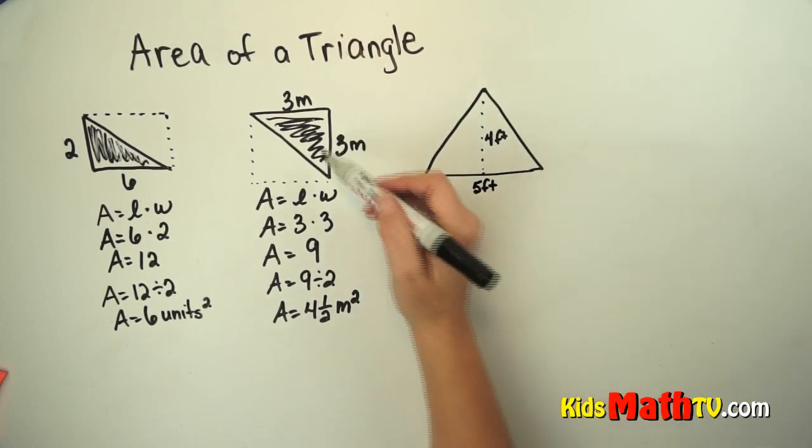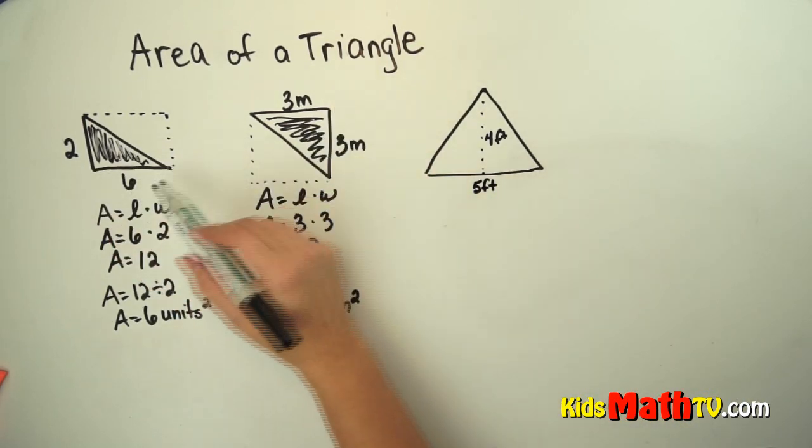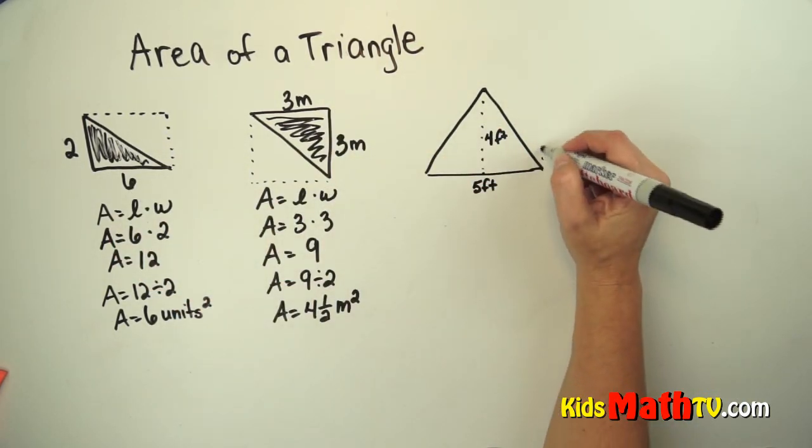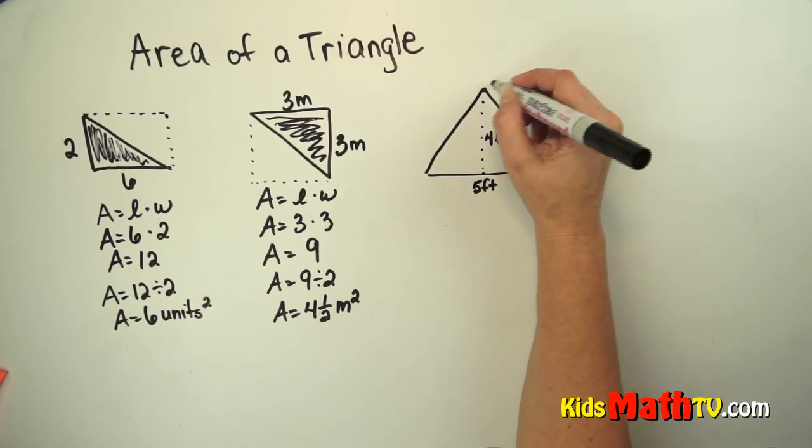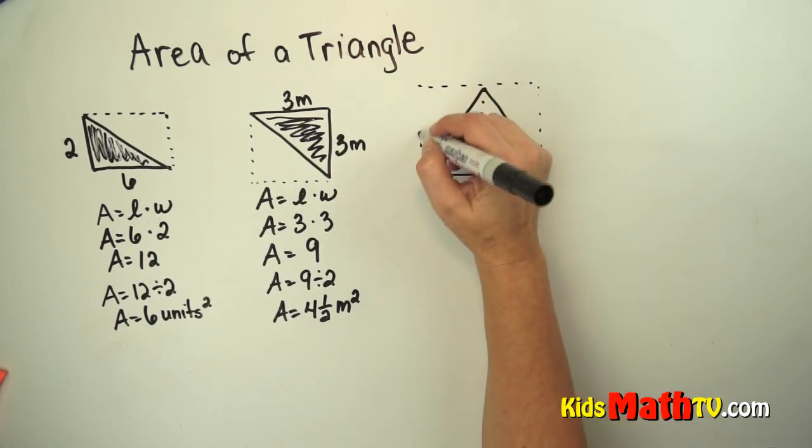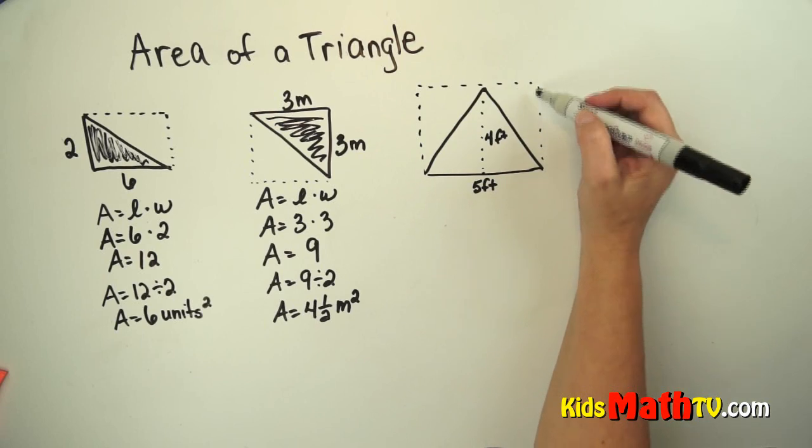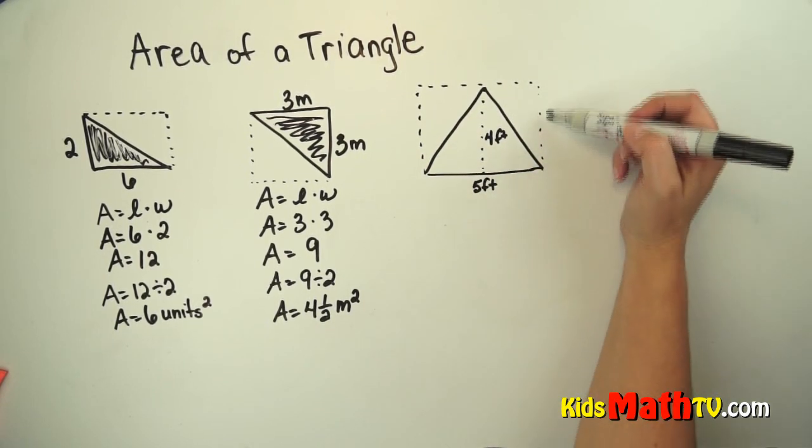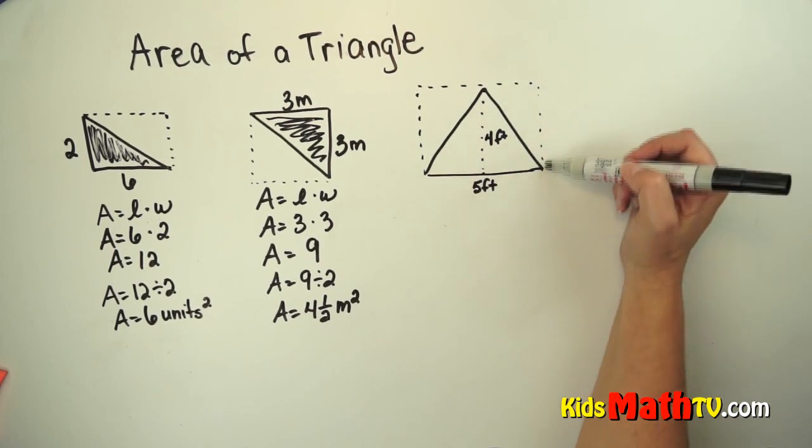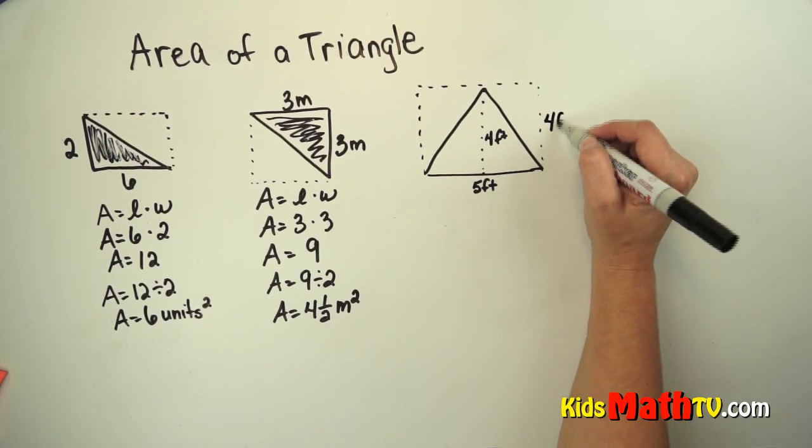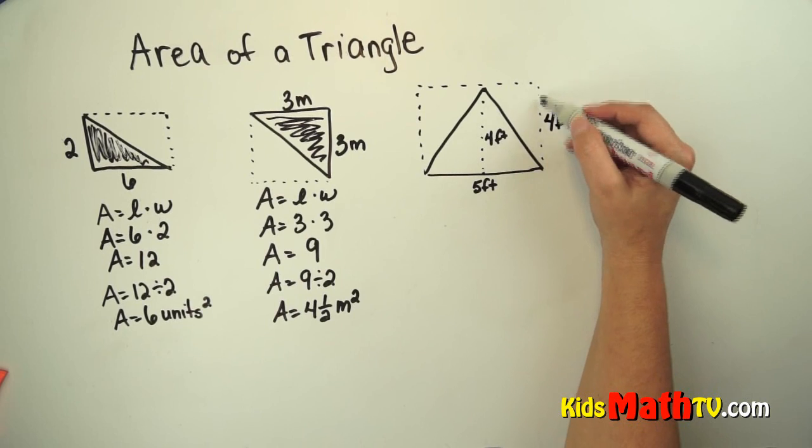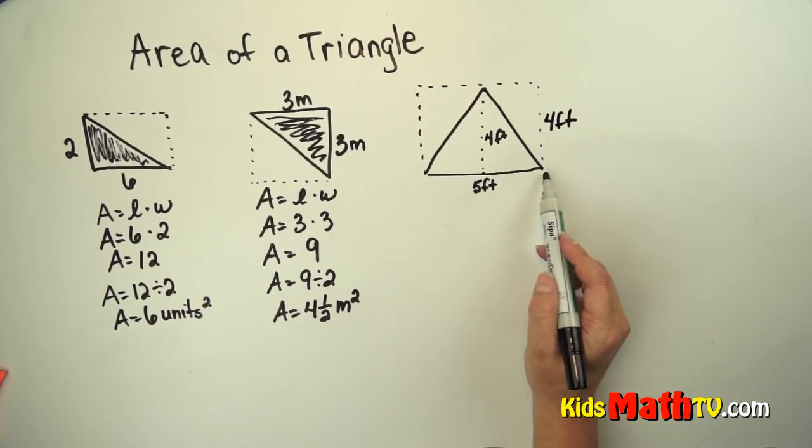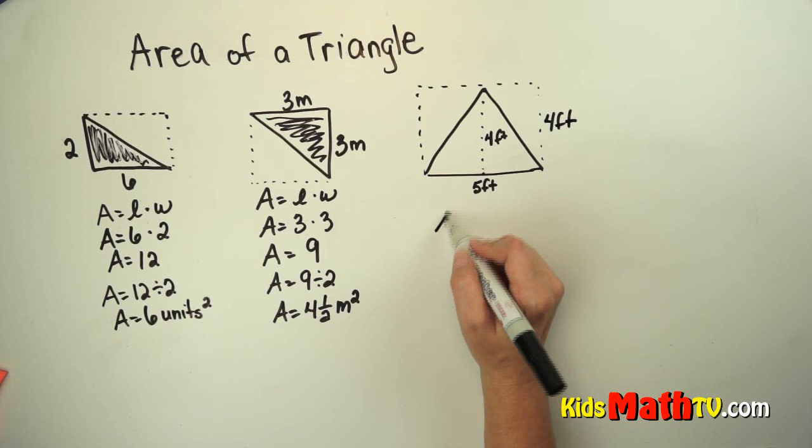So in this case there's not a right angle like we had in these two. So I'm going to create my rectangle like this. It's still a rectangle. I have a length of 5. I also have this width. This width is 4 feet. So this entire rectangle has a length of 5 and a width of 4.